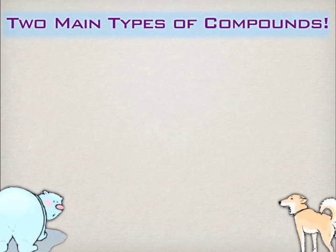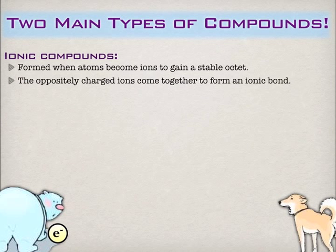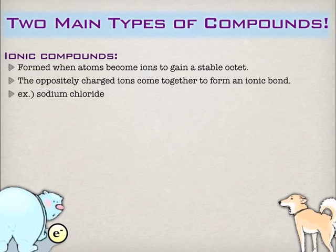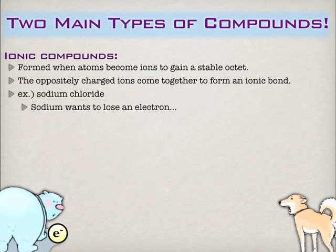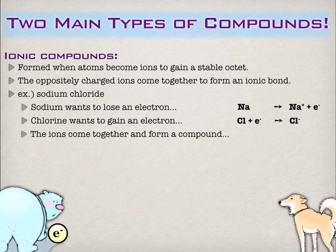There are two main types of compounds. First, ionic compounds — this is where you transfer electrons, either gaining or losing them. Take the classic example of sodium chloride: sodium has one electron in its valence shell and wants to lose it to become isoelectronic with neon. Sodium becomes a sodium cation by losing that electron. Chlorine, on the other hand, wants to gain an electron, becoming a chloride anion and becoming isoelectronic with argon. When sodium and chlorine come together, sodium donates an electron, chlorine accepts it, and they form sodium chloride.